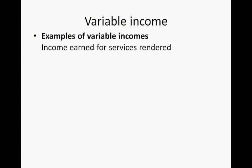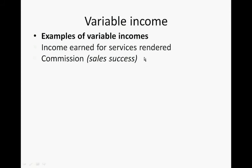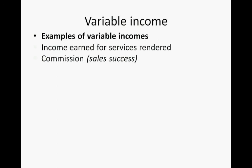Examples of variable incomes include income earned for services rendered — for instance, if you are a hairdresser, in the beauty industry, a mechanic, or an electrician: the harder you work, the more money you get. Commission depends on sales success — such as life insurance, shoes, or any products you sell; even some waiters earn commission.